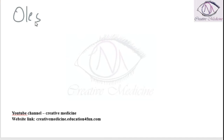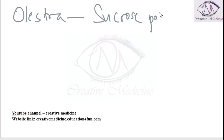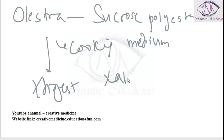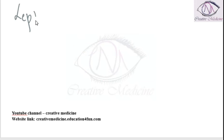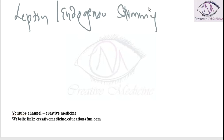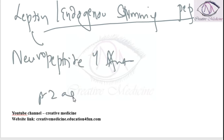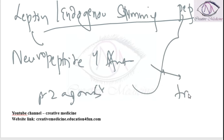Recently, new drugs include Olestra, a sucrose polyester used as a cooking medium in place of fat, which is neither digested nor absorbed. Leptin, also called endogenous slimming peptide, has analogs under study. Neuropeptide Y antagonists and beta-2 adrenergic agonists are also currently in trials as anorectic drugs.